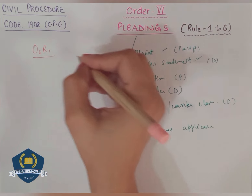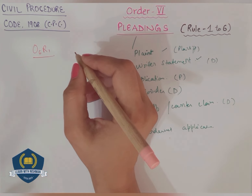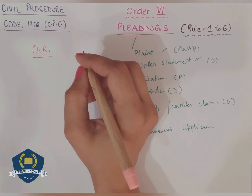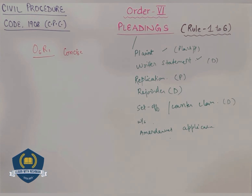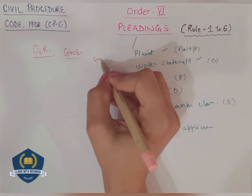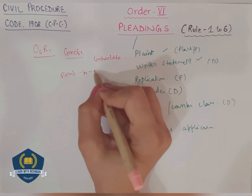Order 6 Rule 1 - the basic rule is that your pleading should be concise and it should be to the point. Whatever you are pleading in the plaint, it should be in concise form, point to point. On the basis of these two - plaint and written statement - the court settles the issues. Whatever the defendant writes in his written statement, the court will see where the contradiction lies, and on the point of contradiction, the court will frame the issues. So you will have to frame your pleadings point to point.